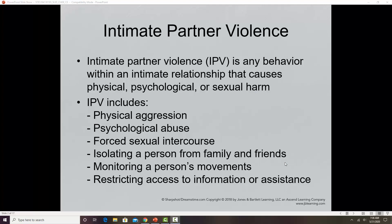The definition is any behavior within an intimate relationship that causes physical, psychological, or sexual harm. It can include physical aggression, psychological abuse, emotional abuse, forced sexual intercourse, isolating a person from their family and friends, monitoring a person's movement — like tracking their phone, monitoring their email, and restricting access to information or assistance. Any of those things would encompass intimate partner violence.